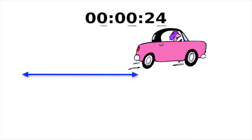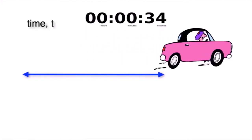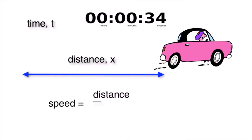The way to determine the speed of anything, say a car, is to measure the time it takes the car to travel a given distance. That is, speed is the distance traveled divided by the time that it takes to travel that distance.